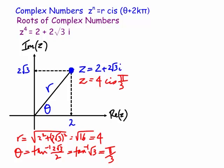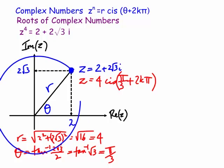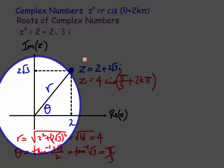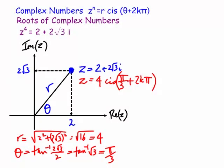Now comes an interesting idea based on the ambiguity of a complex number — I like to think of it like a multi-story car park with layers. We add 2kπ onto the argument: the complex number is the same because we're just going around full circles. k can be any integer; we normally let k = 0, 1, 2, 3, ... up to n−1 for distinct roots.